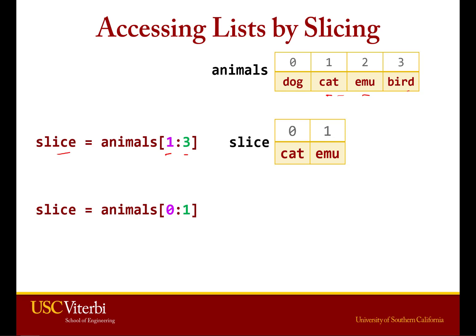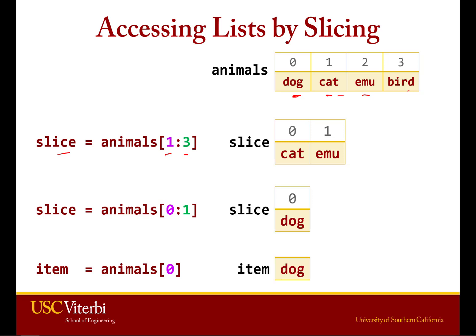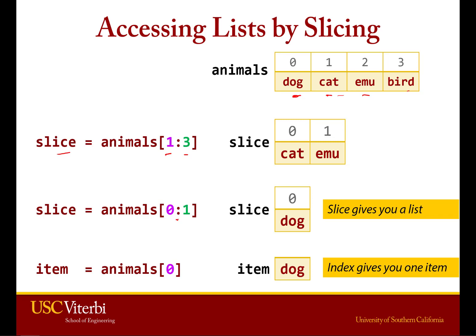If I do animals[0:1], we start at 0 and go up to but not including 1, which means we get one item — just dog. I want to point out that when you use slice notation with the colon, you're going to get a partial list, which means it itself is a list. So even though we only have one item here, it's still returned as a list. In contrast, if you use regular index notation, you don't get a list — you get a single item. It's a subtle difference: if you want a partial list, use a slice; if you want a single item, use the regular index operator.